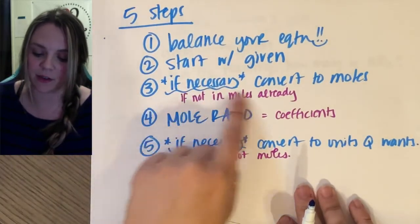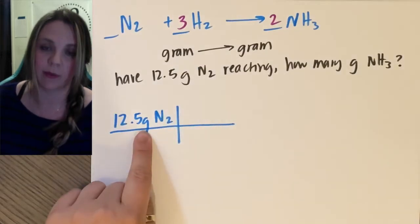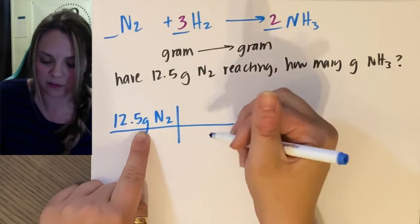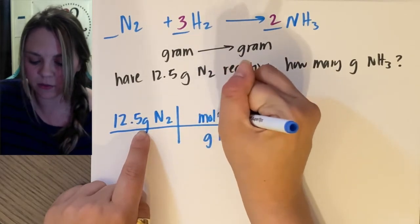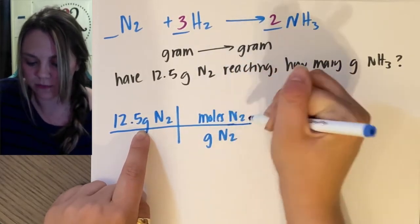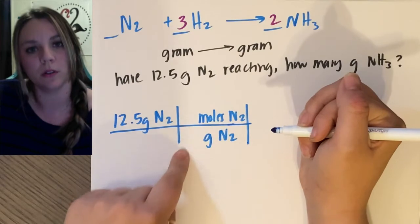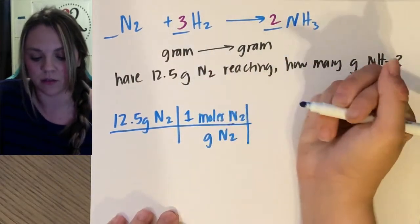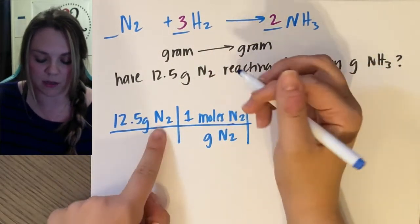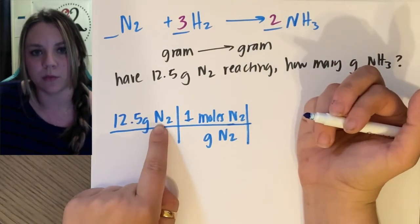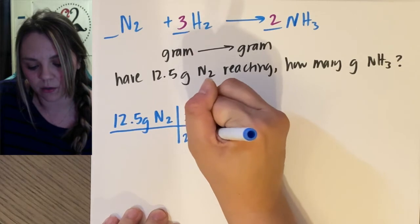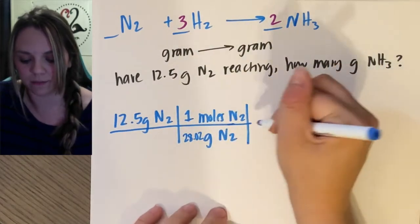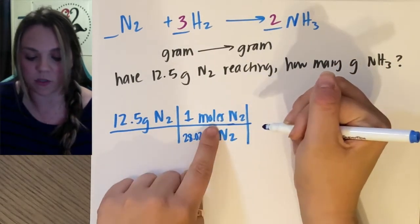Step three, if necessary convert to moles. I'm in grams, it's necessary. I need to get out of grams of N2, get into moles of N2. Whenever I'm going gram to mole, I use my molar mass. So one mole is going to be, each nitrogen is 14.01, two of them, so 28.02 grams. Cool, so now I'm in moles of N2.